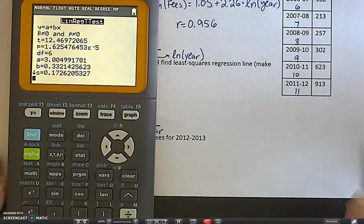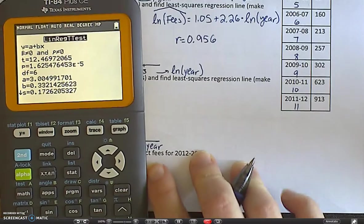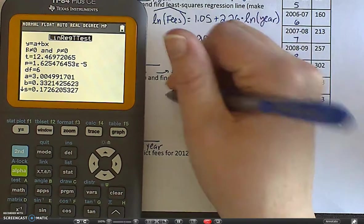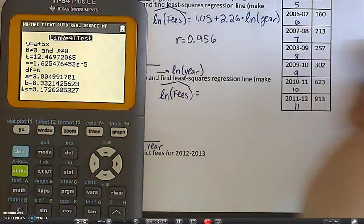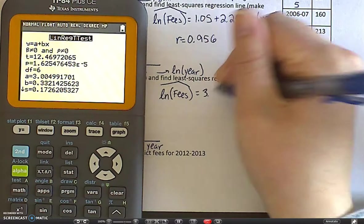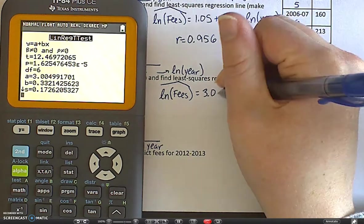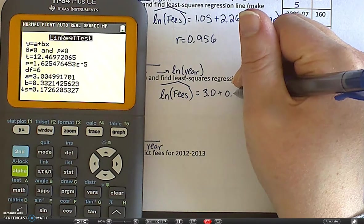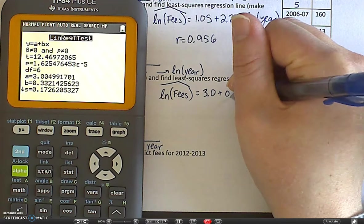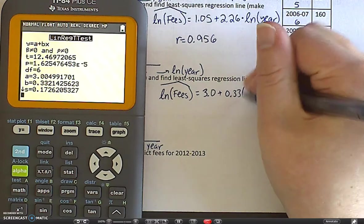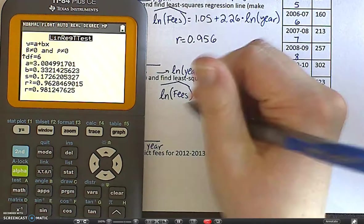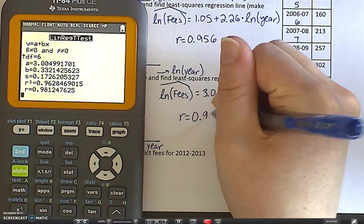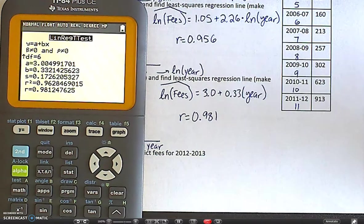So let's again make sure we define our variables. So just like before, we have the natural log of the fees, so that has not changed. It's still the natural log of the fees. Don't forget your hat. My y-intercept was 3.0, plus a slope of 0.33. I'm only going to go to two decimal places. And then instead of the natural log of the year, it was just the year. And I'll scroll down and find my r value. r is 0.981, which is a higher r value than the other one. Now, they're both pretty high, right? I would consider these r values to be strong, positive relationships, linear relationships, as you say.